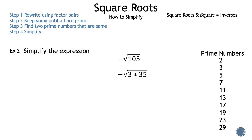If you're not comfortable with factor pairs, 105 is divisible by 3, so keep dividing until all numbers are prime. We bring down the 3 and find a factor pair of 35: that's 5 and 7. Now 3, 5, and 7 are all prime numbers, and there are no two prime numbers that are the same, so this expression cannot be simplified further. Multiplying 3, 5, and 7 back together gives 105, so our final answer is negative square root of 105. That is example 2.